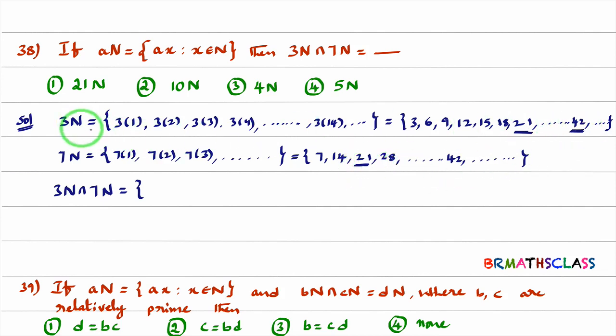Similarly, 42. 42 is a multiple of 3, 42 is a multiple of 7 also. So what's happening here? 21, 42. Try to understand common elements. 21, 42. Next common element, if we search for next common element, you will get 63. 21 into 3 is 63.